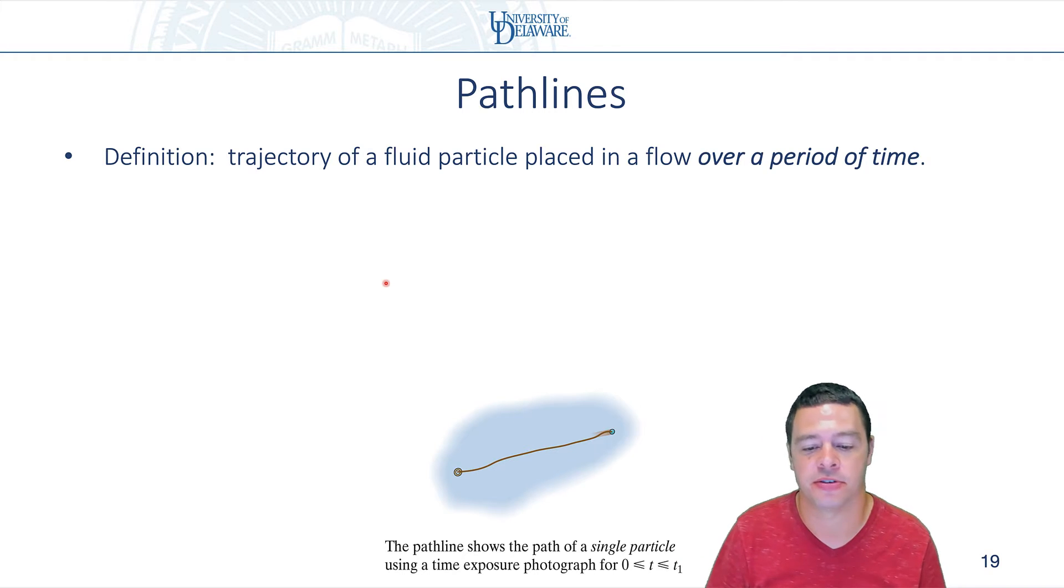One way of looking with a camera to see what it's doing is to basically expose the camera for a certain length of time with a lot of illumination. And what you'll see is that the particle moves from one place to the other and creates a little streak.